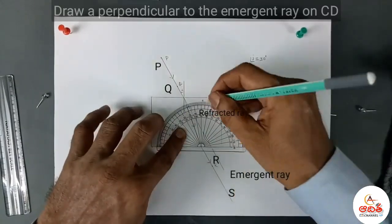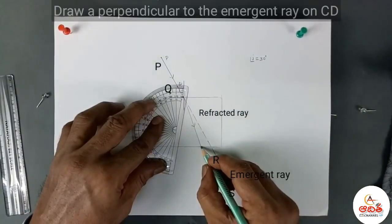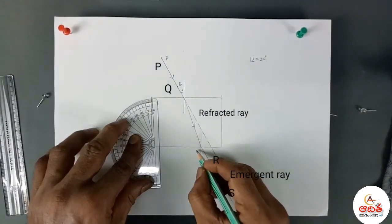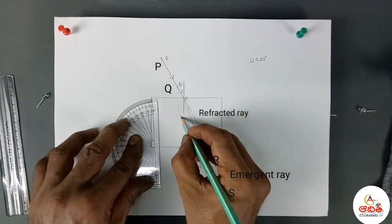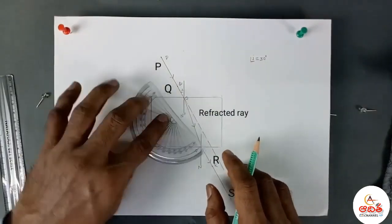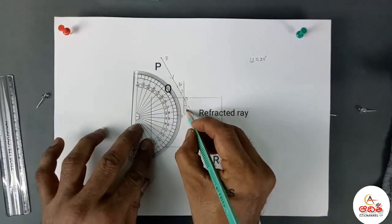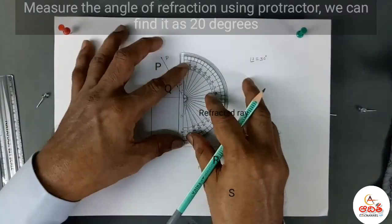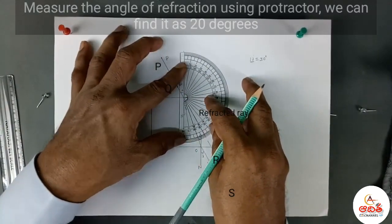Draw a perpendicular to the emergent ray on CD. Measure the angle of refraction using a protractor; we can find it as 20 degrees.